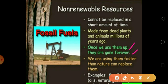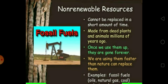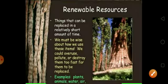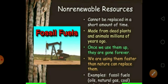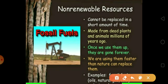They are gone forever because we are using them very quickly. We are using them faster than nature can replace them. For example, like oil, natural gases, coal, petroleum, diesel, all are the non-renewable resources.